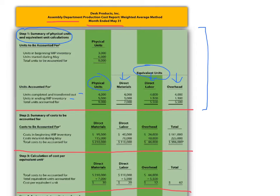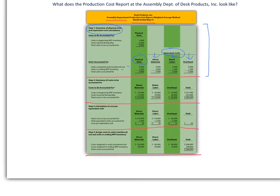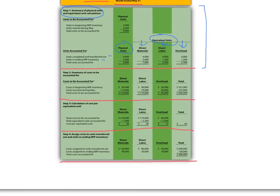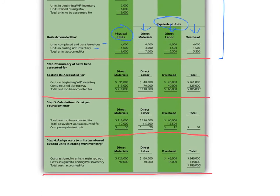Then we take a look at the second part. The second section, step two, is the summary of the costs to be accounted for. You'll see that description right there — 'Summary of costs to be accounted for' — and we have costs for direct materials, direct labor, and overhead, and then in total as well.